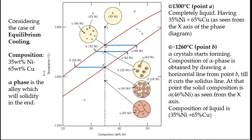The element in majority is called the solvent and the element in minority is called the solute. So 35 percent nickel is the solute and 65 percent copper is the solvent. The alpha phase is what solidifies below the solidus line—only a single phase because the system is completely soluble.